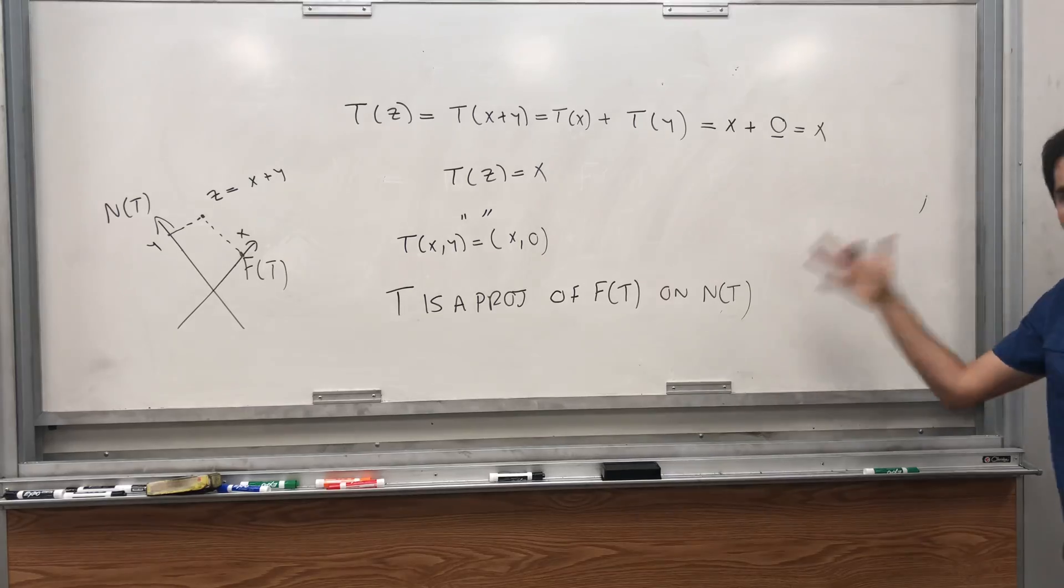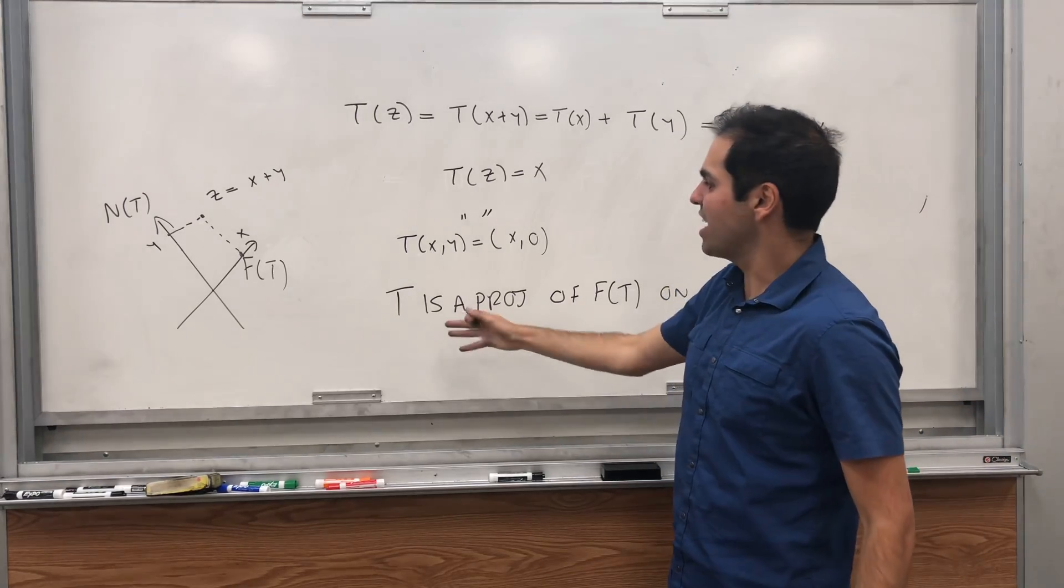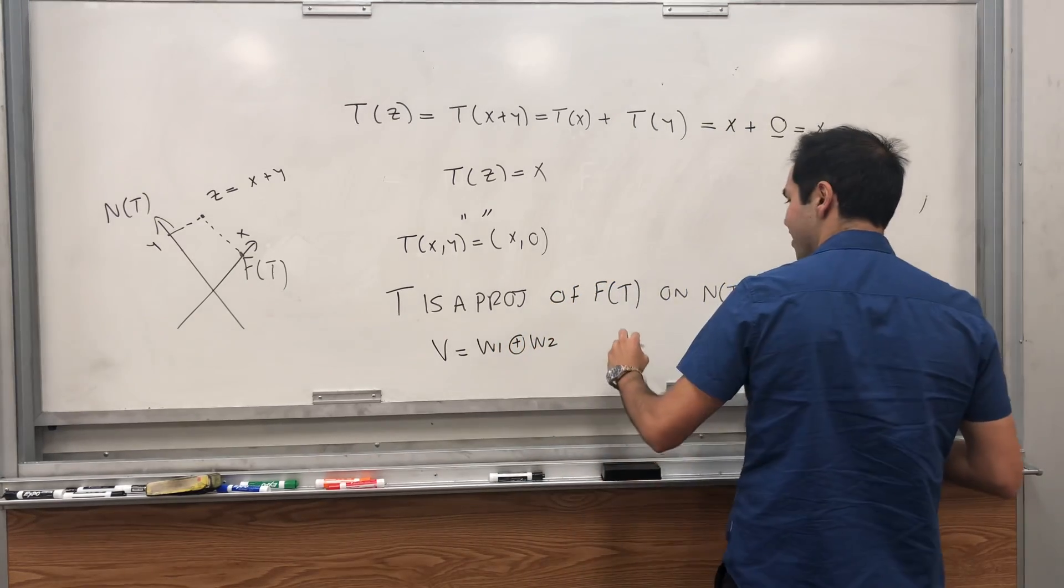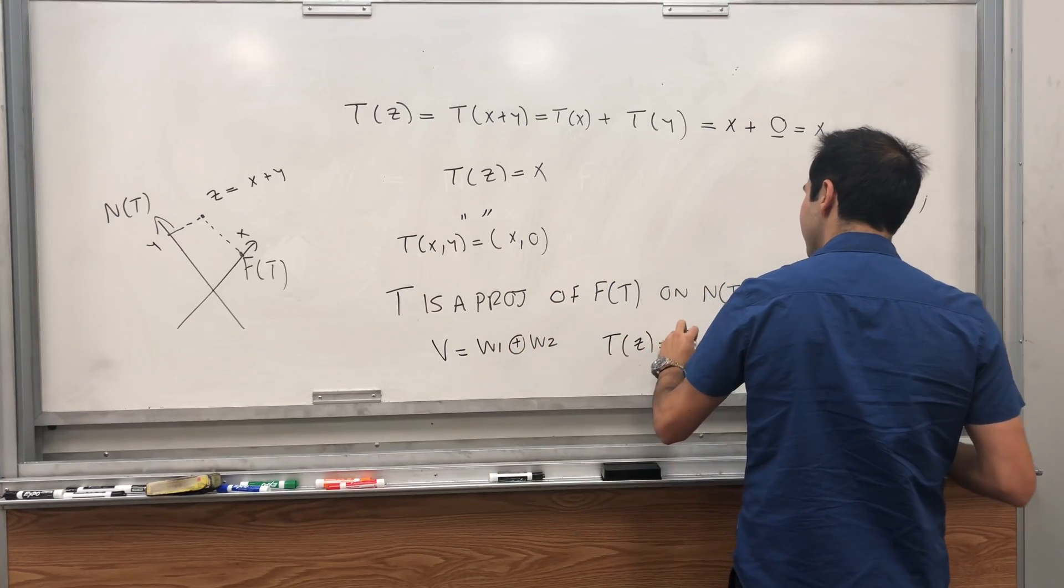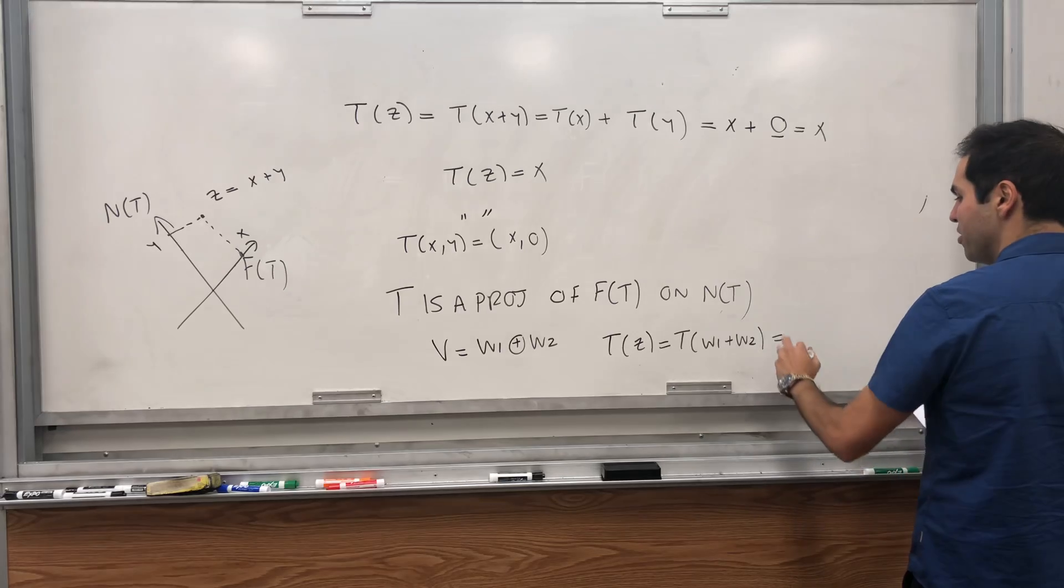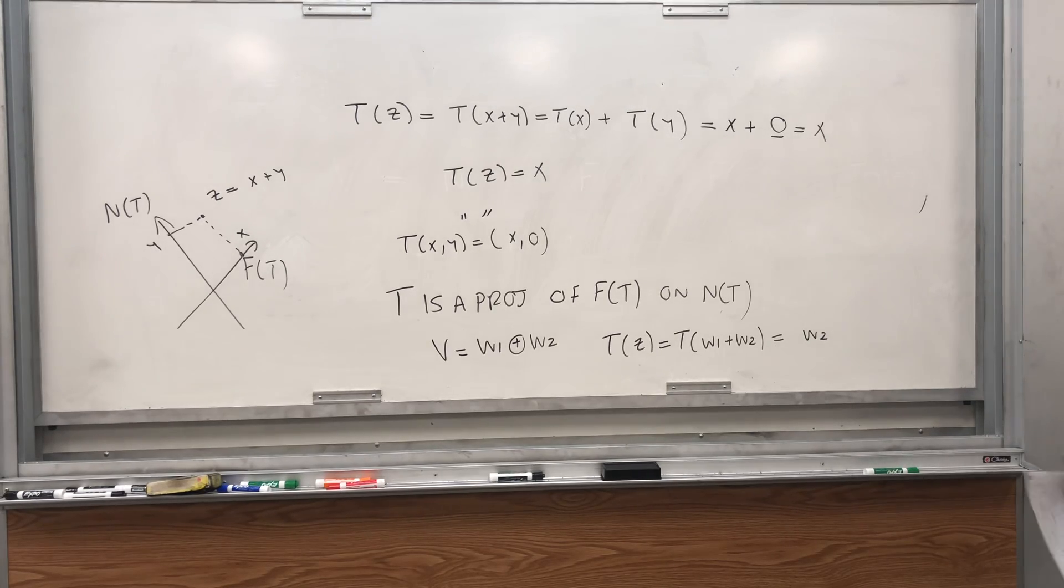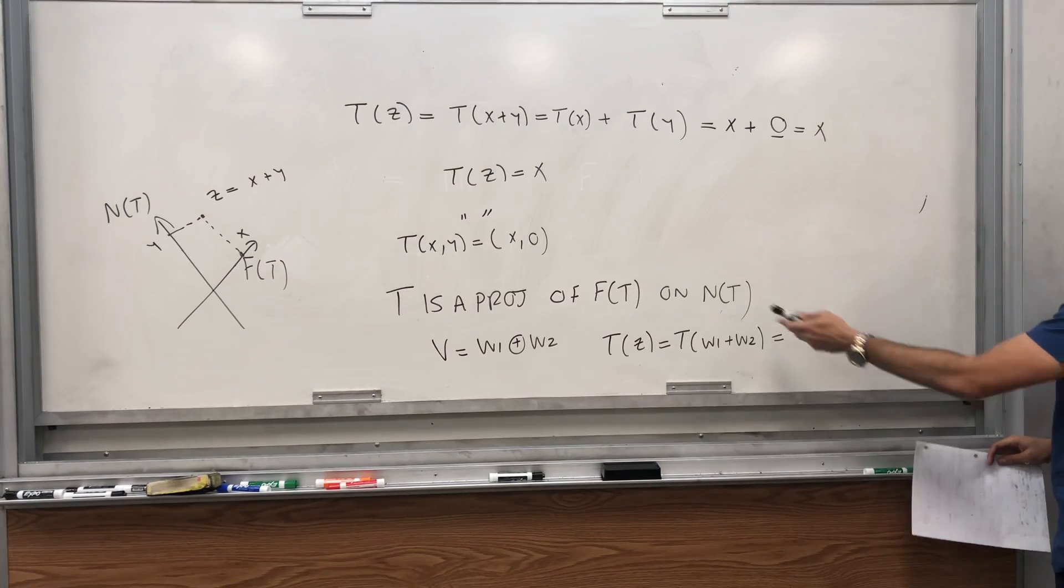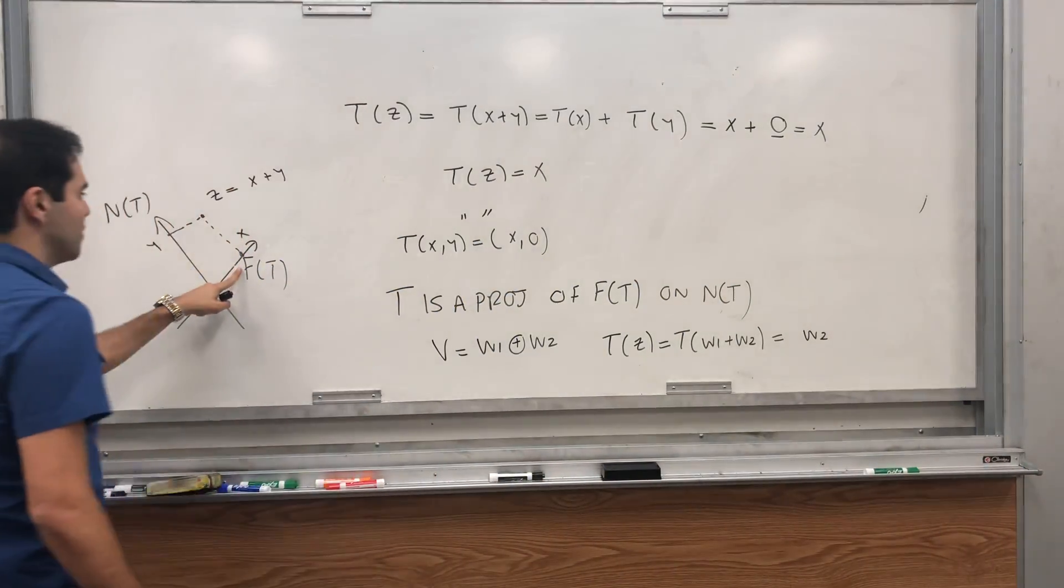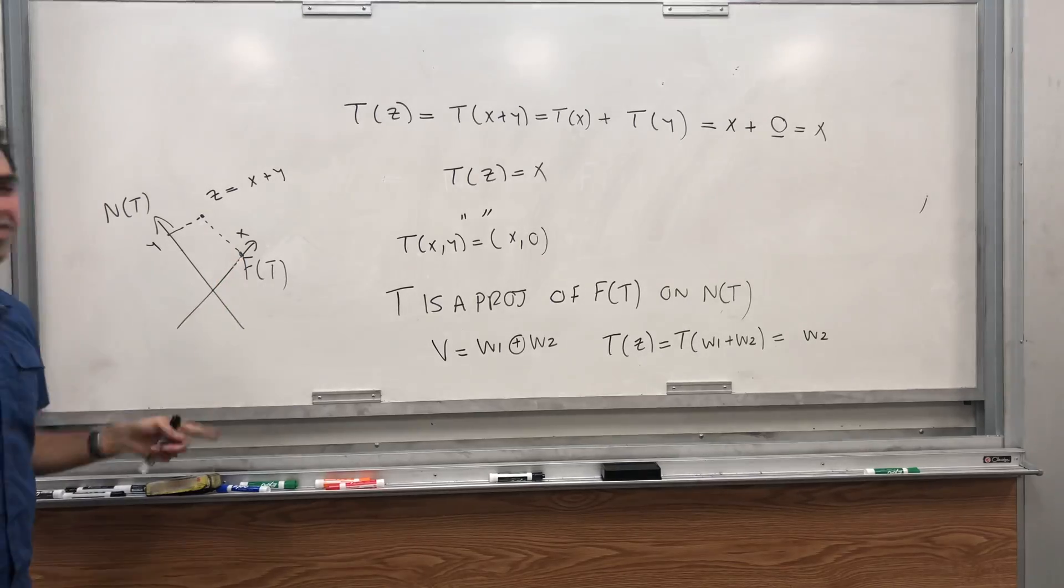And conversely, it turns out any projection, you can also write it in this form. In other words, a projection, what does that mean? It means that if V is the direct sum of W1 and W2, then T(z), you can write it as T(w1 + w2) in a unique way. At least where one is in w1, the other one is in w2. And the projection, let's say, on w2 means it's just w2. And so in particular, you can also show that projections on a subspace are satisfied T squared equals T. But this is kind of obvious because if you project on a space T, and then you apply T again, you won't end up anywhere else. You just stay at this place.